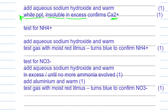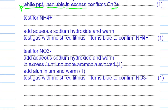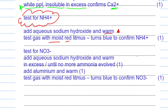Next, for the test for ammonium ion: add aqueous sodium hydroxide and warm. After heating this mixture, a gas is given off which turns moist red litmus paper blue. This is the key point to memorize. If we get this result, we confirm that ammonium ions are present.